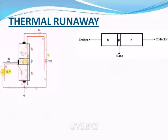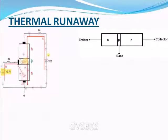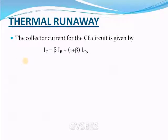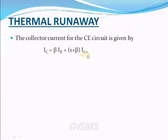If the heat keeps on increasing, that heat will destroy the transistor — that is nothing but thermal runaway. We all know the equation for the collector current: IC = β·IB + (1+β)·ICO, where IC is the collector current, β is the forward current gain, IB is the base current, and ICO is the reverse saturation current or leakage current.